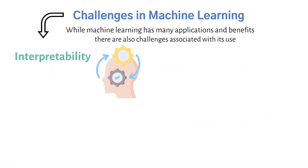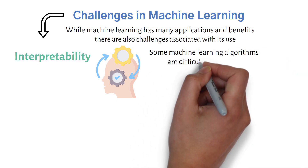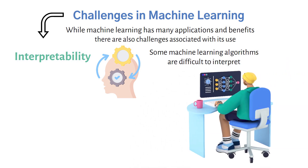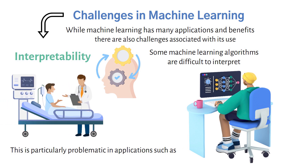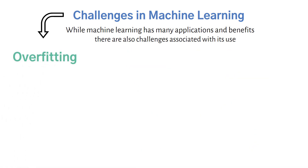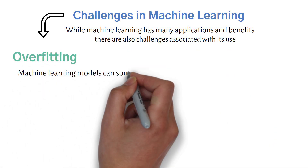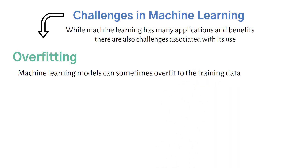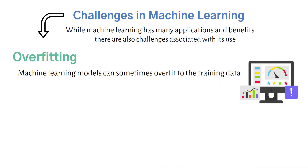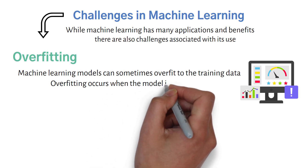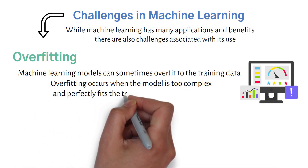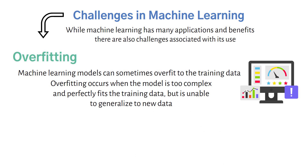Interpretability: some machine learning algorithms are difficult to interpret, which can make it challenging to understand how they are making predictions. This is particularly problematic in applications such as medical diagnosis, where it is important to understand how the algorithm arrived at its conclusion. Overfitting: machine learning models can sometimes overfit the training data, leading to poor performance on new data. Overfitting occurs when the model is too complex and perfectly fits the training data but is unable to generalize to new data.